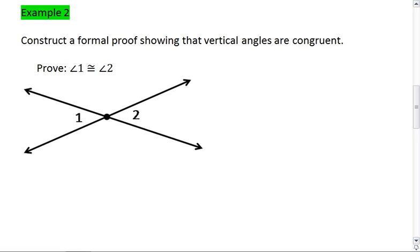Example 2, we want to construct a formal proof showing that vertical angles are congruent. So we want to prove that angle 1 is congruent to angle 2.